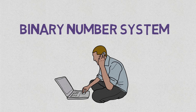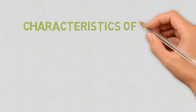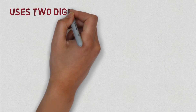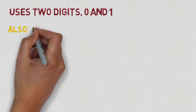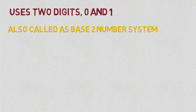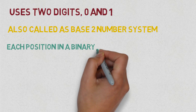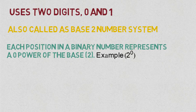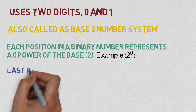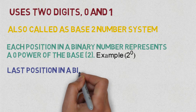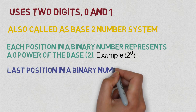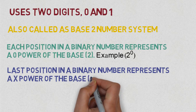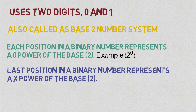The important characteristics of the binary number system: it uses digits 0 and 1, and is also called the base-2 number system. Each position in a binary number represents a power of the base 2 — for example, 2⁰ for the first position. The last position in a binary number represents 2^x, where x represents that last position.